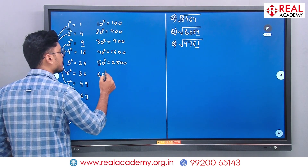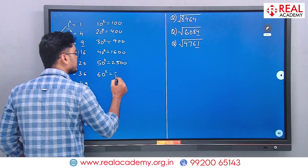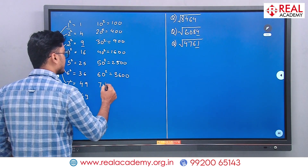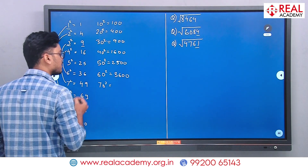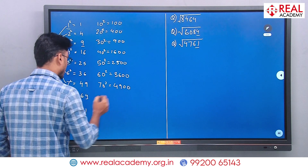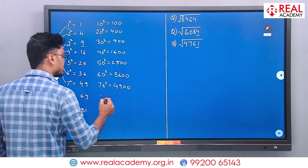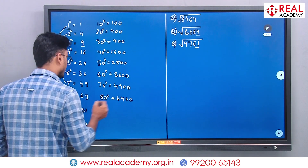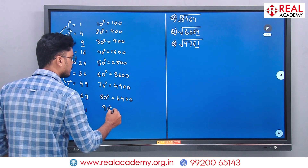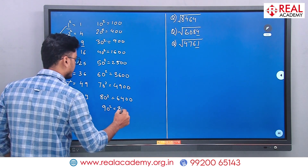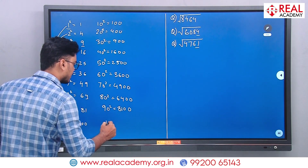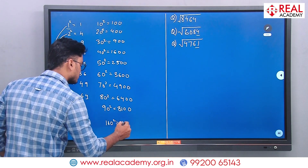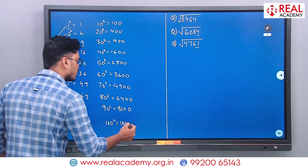60 squared is 3600. 70 squared is 4900. 80 squared is 6400. 90 squared is 8100. 100 squared is 10000. We need this to find the range — to know between which two numbers the square root of our target number will fall.